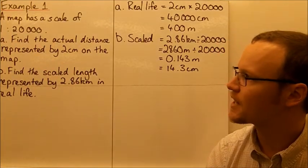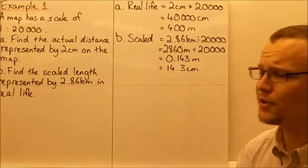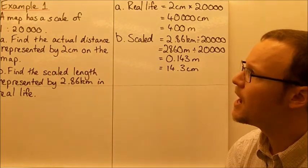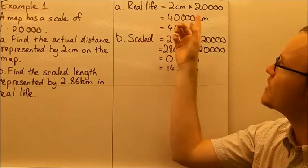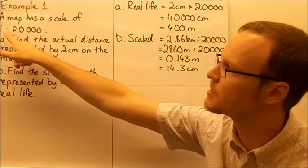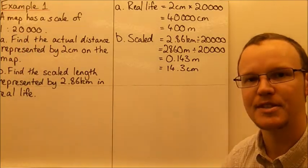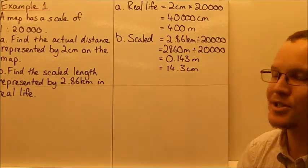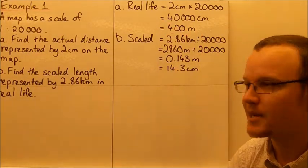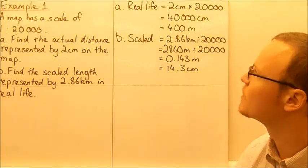We're finding an actual distance and a scale length, going in both directions. To find the real-life distance when it's 2 centimetres on the page, we multiply by the scale factor. The scale factor here is 20,000, because the first number in the ratio is 1. So 2 centimetres times 20,000 equals 40,000 centimetres — meaning 2 centimetres on the page represents 40,000 centimetres in real life.